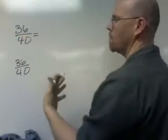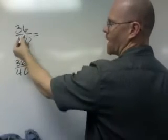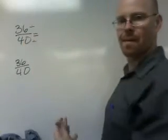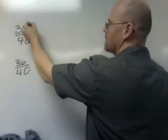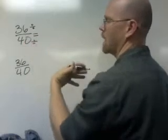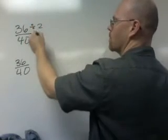One method to reduce a fraction is to divide both the numerator and the denominator by something. In this case we'll say 36 and 40 are both divisible by 2, so we'll divide them both by 2.